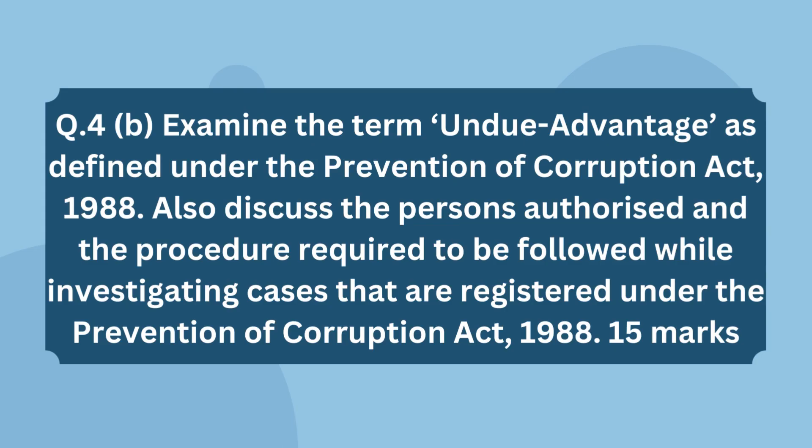The second part asks you to examine the term 'undue advantage' as defined under the Prevention of Corruption Act, 1988, and discuss the persons authorized and the procedure required to be followed while investigating cases registered under the Act. Start with the definition of undue advantage under the Act and explain it, also mentioning the 2018 amendment which inserted this provision. Then state the authorized persons — officers not below the rank of DSP and ACP — along with relevant sections, and explain the procedure of investigation like search, seizure, arrest, etc.